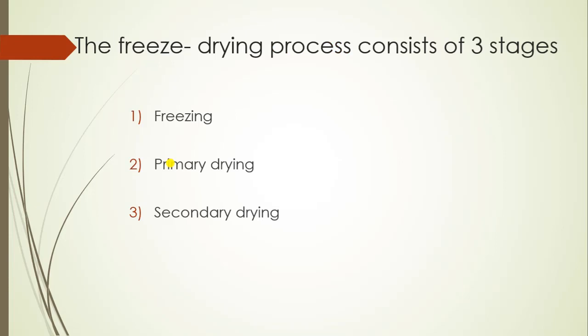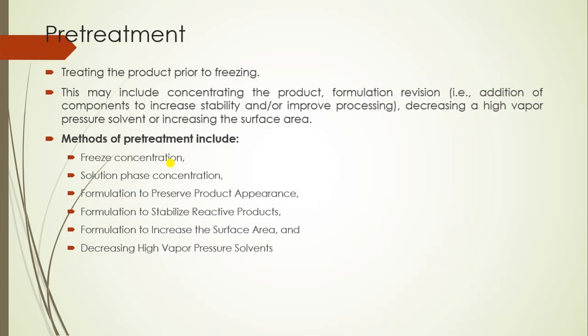As you know, the freeze drying process consists of three different stages: freezing, primary drying, and secondary drying. In this video we are going to discuss about primary drying only. Starting with pretreatment — sometimes, to improve the product characteristics or to reduce the primary and secondary drying cycle time, pretreatment is done, which is called treating the product before freezing.